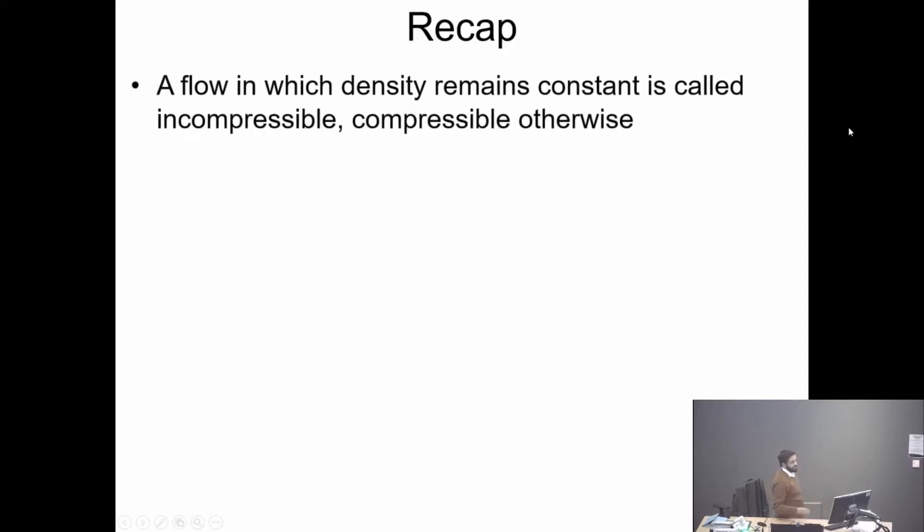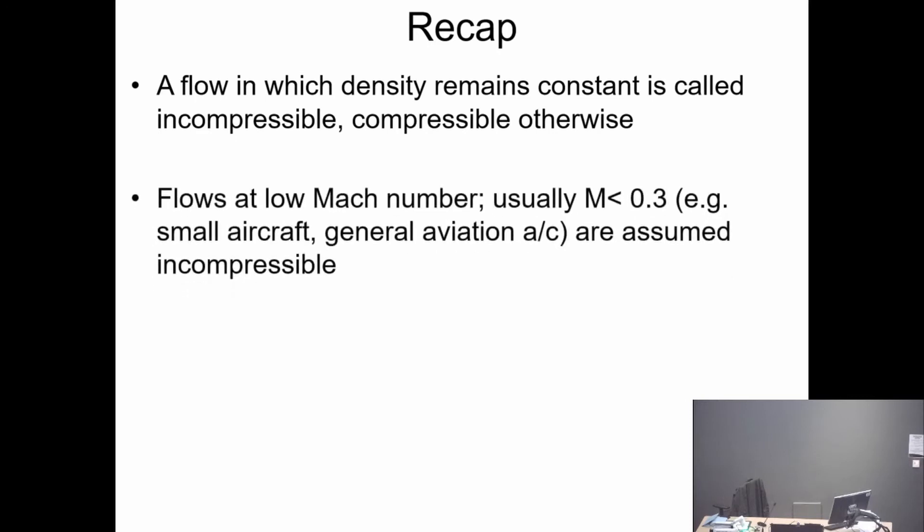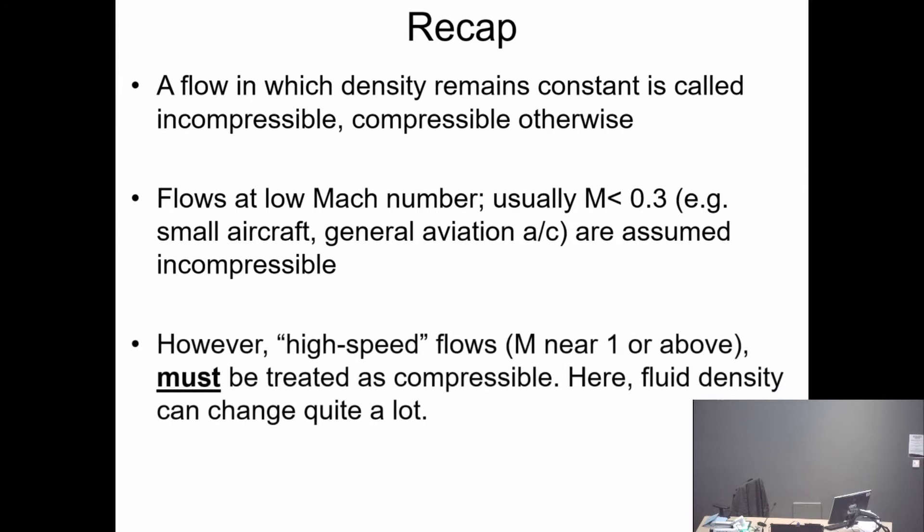By way of recap, a flow in which density remains constant is called incompressible, compressible otherwise. If the Mach number is less than 0.3, we call that incompressible as well. That's a general rule in aviation. But if we go beyond that Mach number, then we must assume the flow is compressible, which means the density will change - it doesn't remain constant.